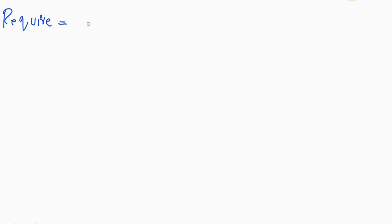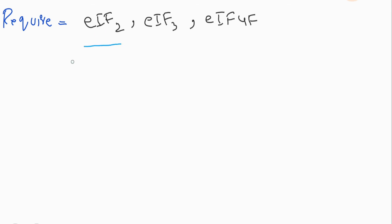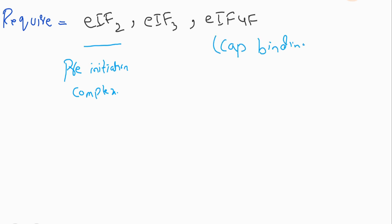The initiation factors required are eIF2, eIF3, and eIF4F. The eIF2 is part of the pre-initiation complex. The eIF4F is known as the cap-binding protein, and it is also a complex consisting of eIF4A, eIF4E, and eIF4G.